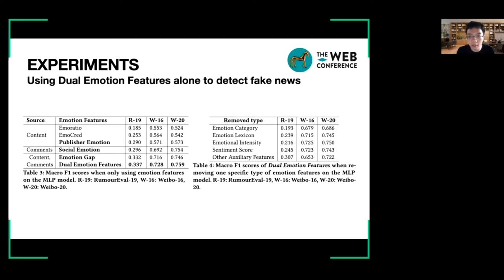What's more, we can see more improvements of social emotion and emotion gaps. Further, to verify the effect of every type of dual emotion features, we remove one specific type every time. The result indicates that, regardless of the removed type of emotion features, dual emotion features all decrease. Thus, it reveals the necessity of using five types of emotion features jointly.